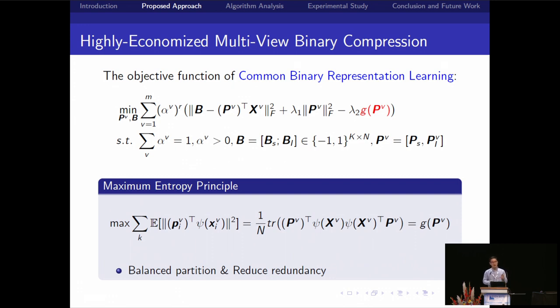You know that when we directly compress the real value feature to a lower binary feature, you must lose something. So we should try our best to maximize each information in each bit. We add an info-max entropy principle here to try our best to reduce the redundancy and at the same time make the learning bandwidth balanced.